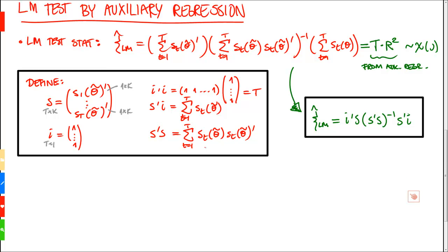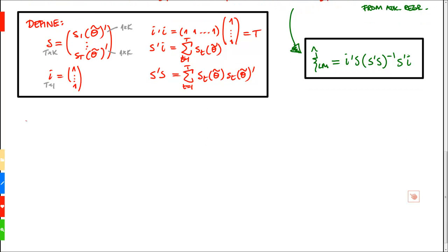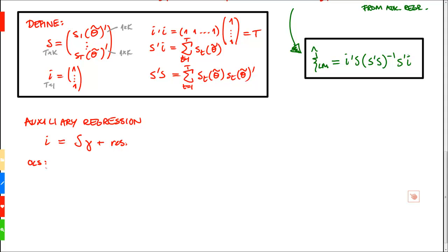The auxiliary regression is something that we run just in order to get this test statistic, so we don't do any interpretation of the estimated parameters. We run an auxiliary regression where we regress i — just a constant vector — on S with parameters γ and a residual. From this model, OLS gives us γ̂ = (S'S)⁻¹ S'i.